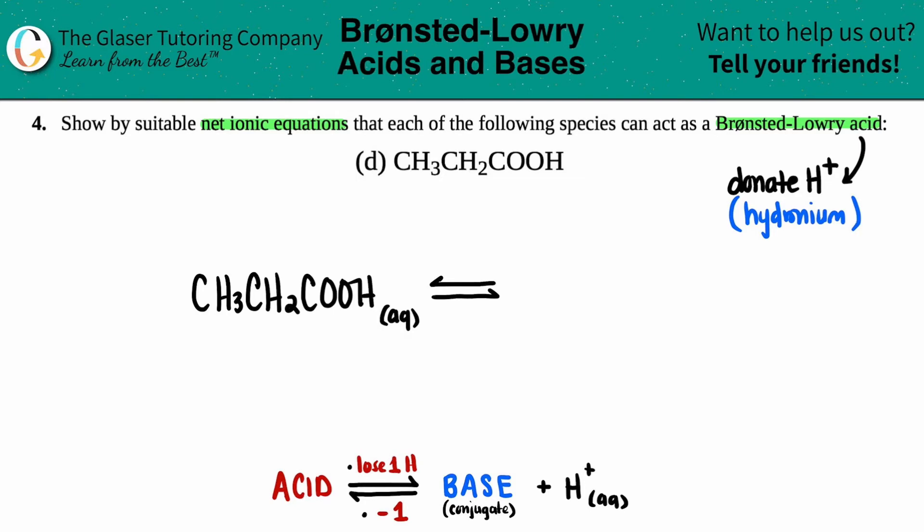And now, since it's going to donate a hydrogen, it's going to lose one. So you're always going to see an H plus on the product side if you're starting with an acid. Now we just got to figure out what is the remainder? What is that conjugate base?